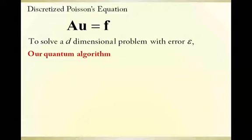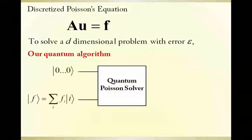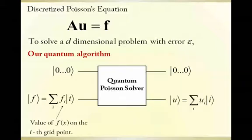Now let's focus on the quantum algorithm. Apart from ancilla qubits, the input to the algorithm is a superposition of function evaluations of the right-hand side of the Poisson equation. The output of the algorithm is a quantum state encoding the solution.